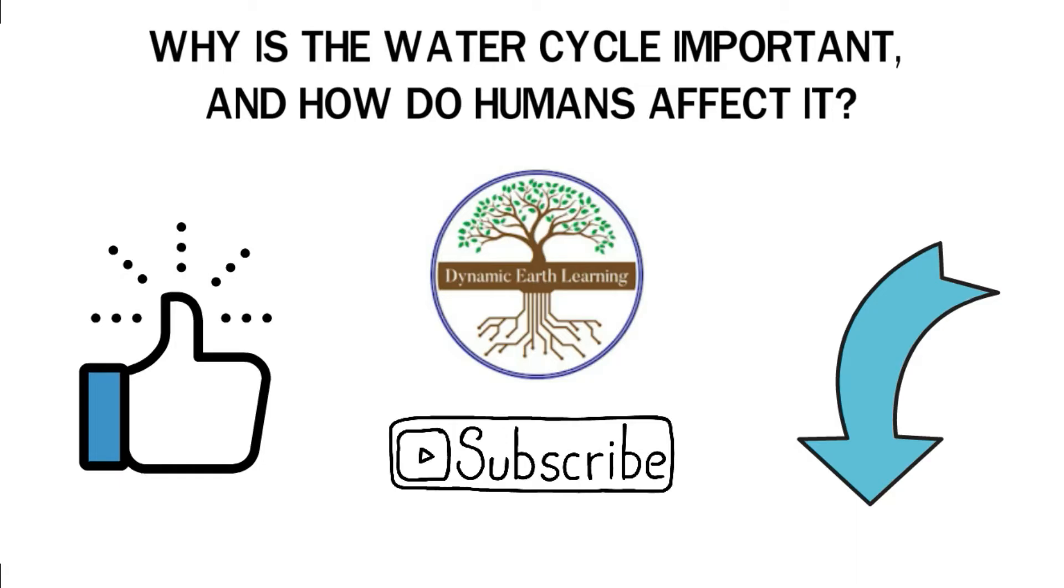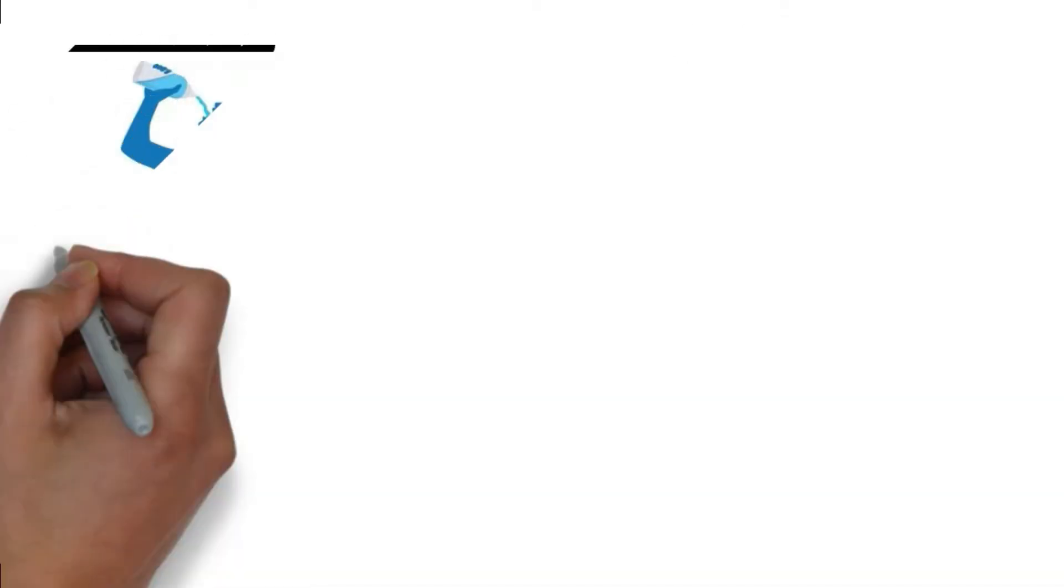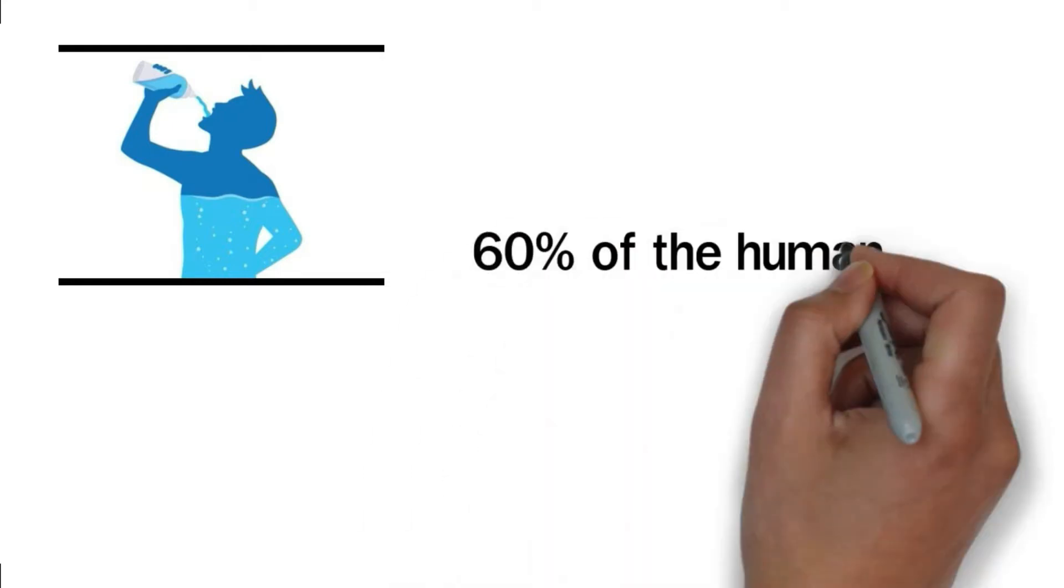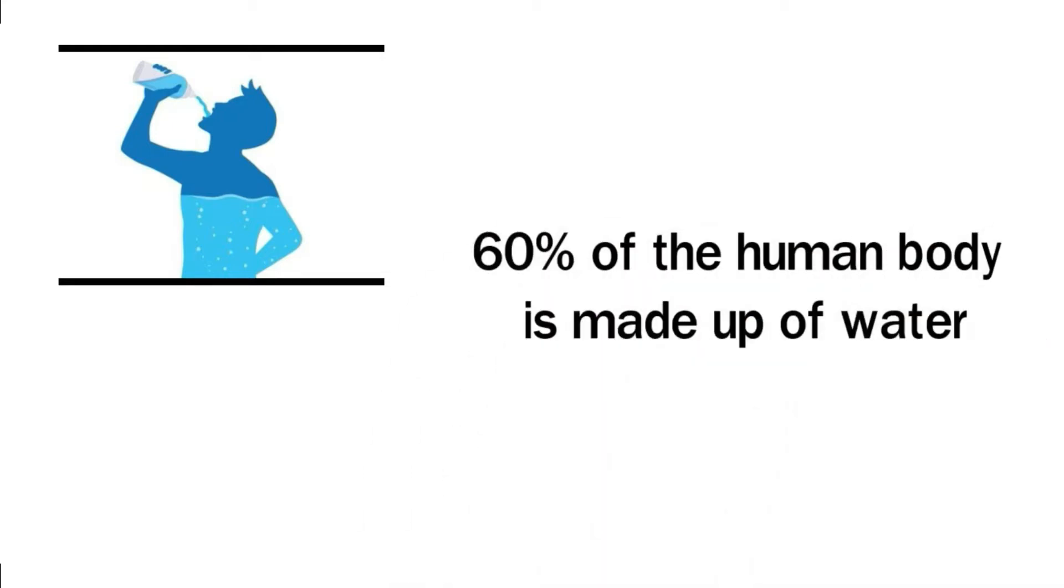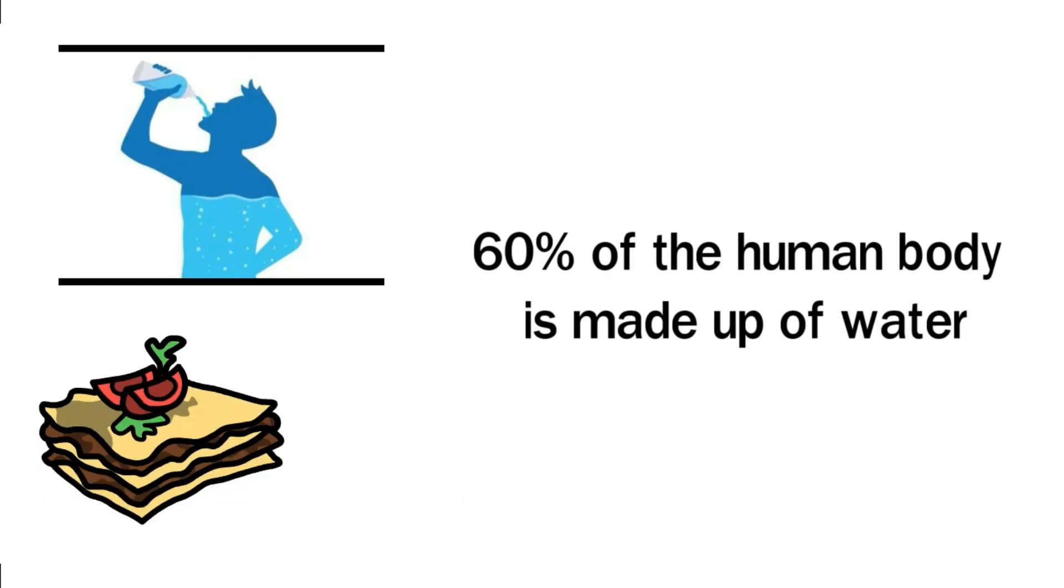All life on Earth is reliant on the water cycle. Our bodies need lots of water to perform various biological processes. In fact, up to 60% of the human body is made up of water. We can go for several days without food but can only survive for a few days when it comes to water.